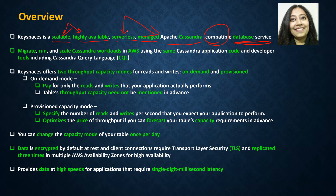This particular service, Keyspaces, is compatible with Apache Cassandra database. Apache Cassandra is a NoSQL open source distributed database known to handle large amounts of data. You can consider Keyspaces as a version of Apache Cassandra running on AWS.